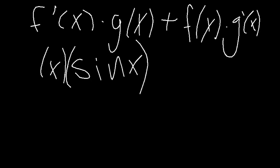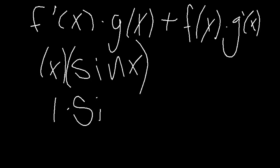So we have x times sine of x. The derivative of x is just 1 because of the power rule. So we have 1 times — and because there's no derivative here, we won't find a derivative of sine. So there's just 1 times sine of x, plus...